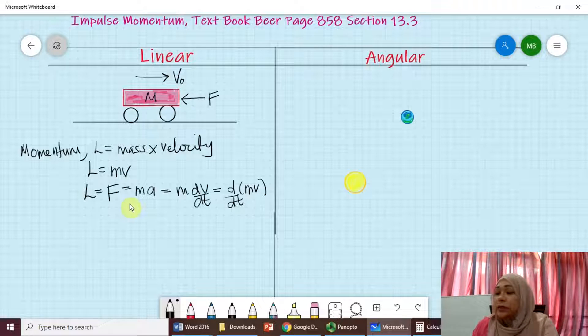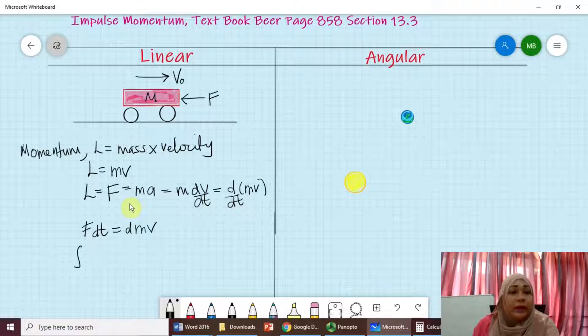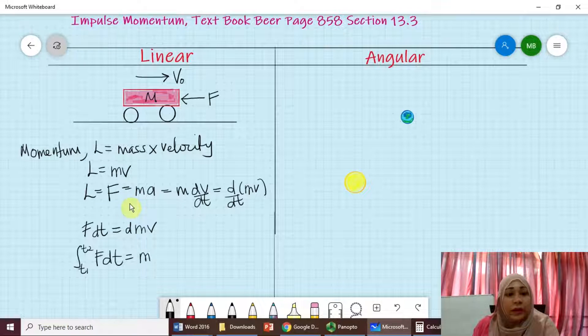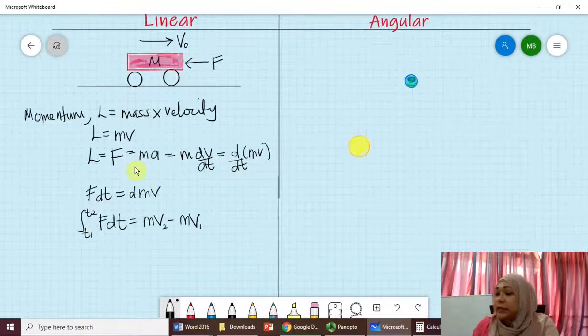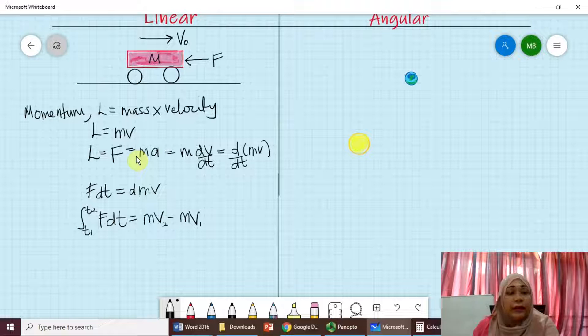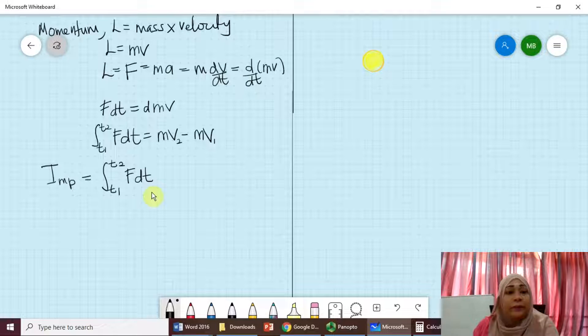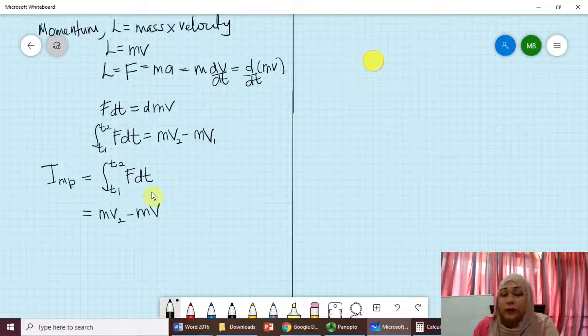Now, let's assume we are multiplying both sides with dt. What you will get is F dt equals to d(MV). And then we integrate both sides. You will get integration from time T1 to T2, F dt equals to MV2 minus MV1. Now, this equation here, what you see is actually known as linear impulse, where impulse equals to the integration of force from time T1 to T2, F dt.